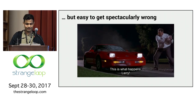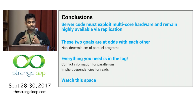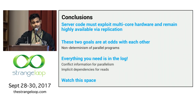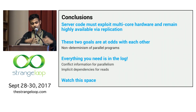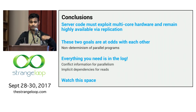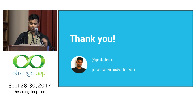Multi-cores and replication are similarly easy to get spectacularly wrong, even though the problem seems relatively innocuous. In conclusion, server code must exploit multi-core hardware and remain highly available via replication, but these two goals are at odds due to non-determinism in parallel programs. Everything you need is in the log: conflict information provides parallelism, and log order ensures implicit dependencies are satisfied for reads. We're actively working on both research and building this in an existing system — so watch this space. I'm Josef Alero, thank you. If you're experiencing replication lag, I'm happy to meet up and chat more.